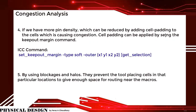If we have higher pin density, it can be reduced by adding cell padding to the cells causing congestion. Cell padding can be applied by using the keep_out_margin command. The ICC command used is: set_cell_keep_out_margin -type soft -outer with the bounding box area and get_selection.